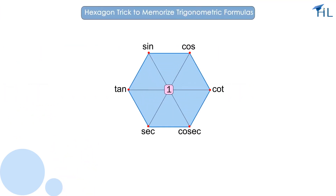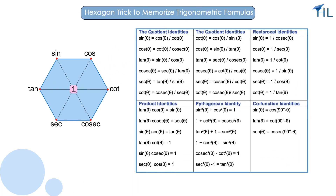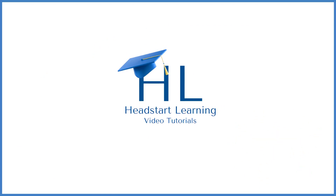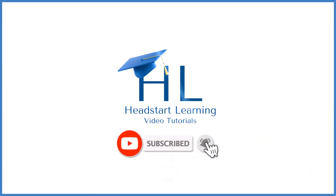There we have it — a hexagon-based mnemonic method to remember key trigonometric formulas. This simple visual tool can make trigonometry identities easy to remember. If you have found this method helpful, please give this video a thumbs up, share it with your friends, and subscribe for more creative ways to learn and remember math concepts.